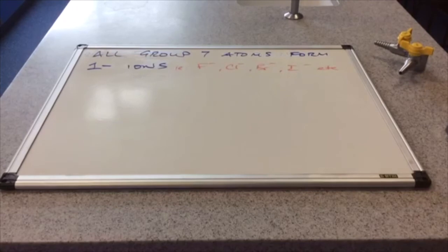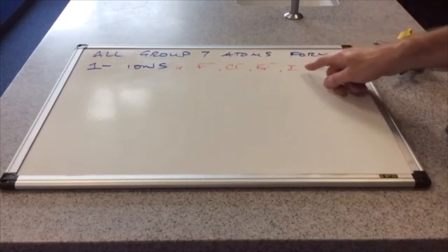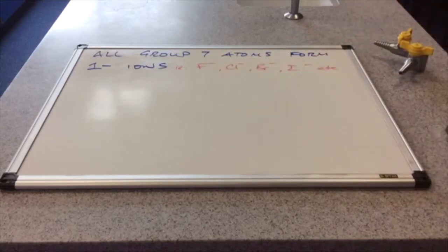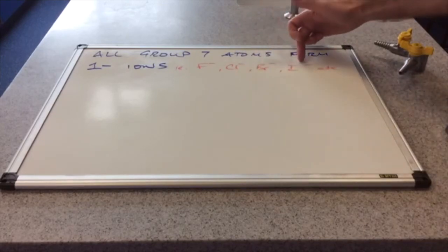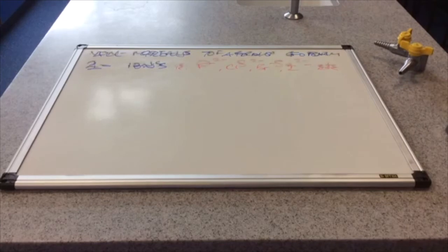The formula of the fluoride ion is F-. And again, just like we did with the metals of group 1, we're going to say that all group 7 atoms, because they've got 7 electrons in their outer shell, they're all going to do the same as fluorine. So they're all going to accept one electron, gain one electron, and form these 1- ions with these formulae. Remember, the name must end in ide, so we've got chloride, bromide, iodide.